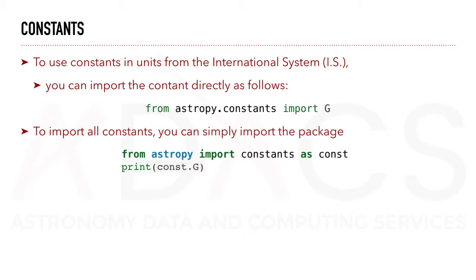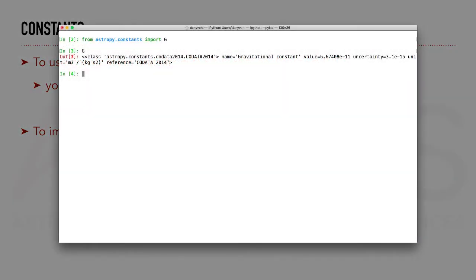To use constants and units from the international system, you can import the constant directly as follows. For example, from AstroPy.constants, import G. In this case, we would import the gravitational constant.